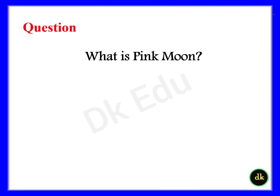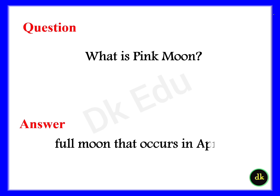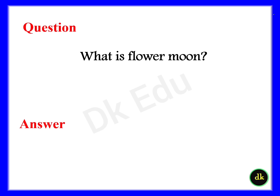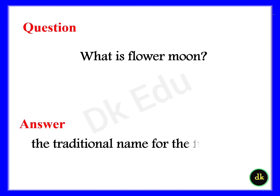Question: What month has no full moon? Answer: February. Question: What is a pink moon? Answer: The full moon that occurs in April is called a pink moon. Question: What is a flower moon? Answer: The traditional name for the full moon that occurs in May.